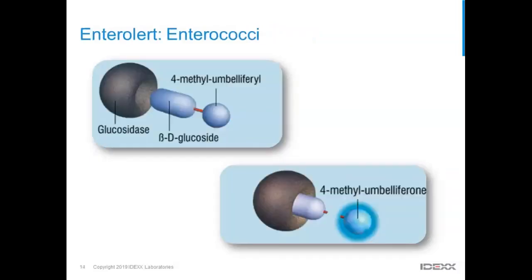Enteralert works on the same system. The nutrient indicator is 4-MU β-glucoside. Enterococci have the enzyme glucosidase, which cleaves the sugar group and releases the indicator, which fluoresces when exposed to UV light.